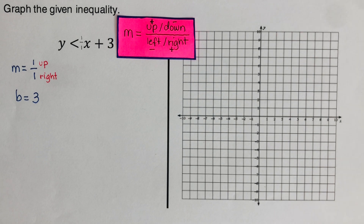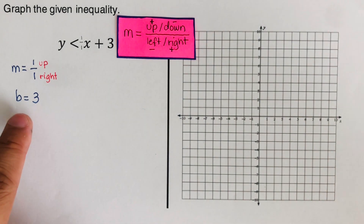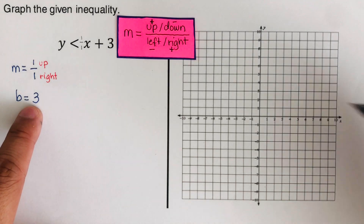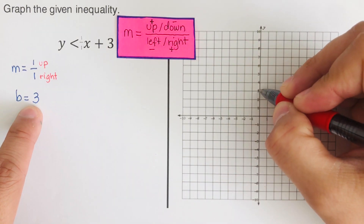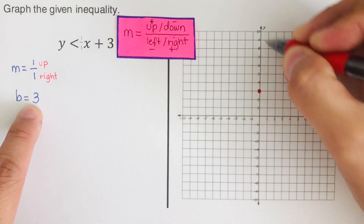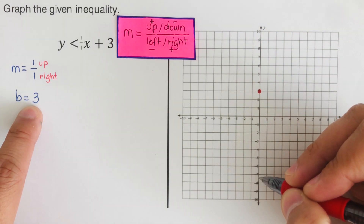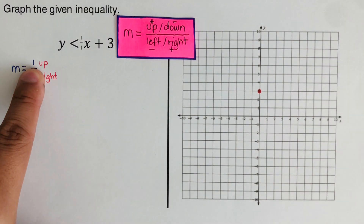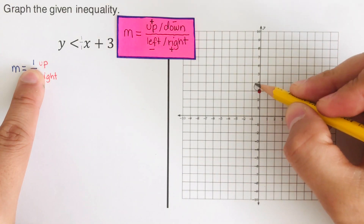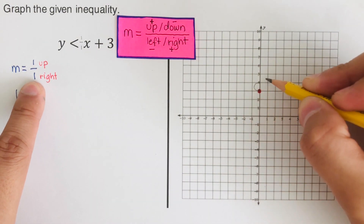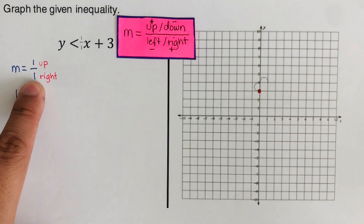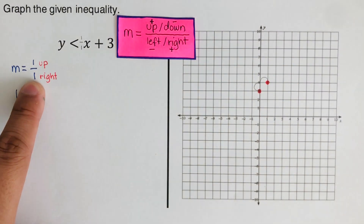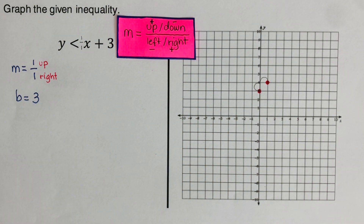When we graph this, we always plot the y-intercept first, which is 3, so I put a dot at 3 on the y-axis. Then I go up 1 and right 1 to find the second point. From here we connect these dots together.